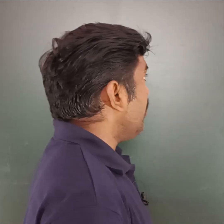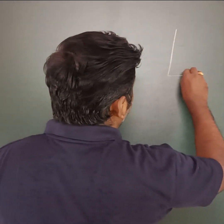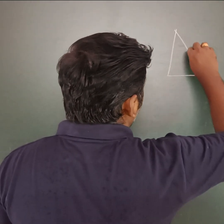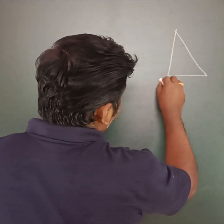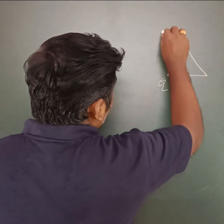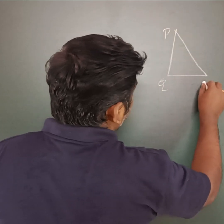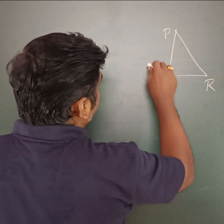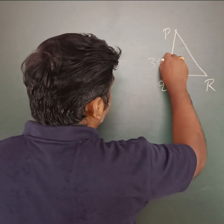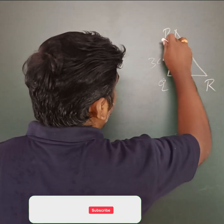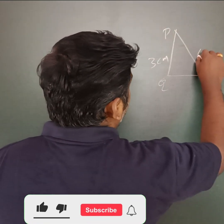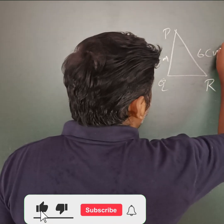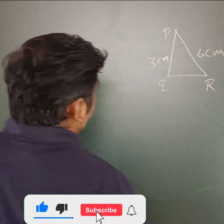So first we have a right angle triangle, right angle at Q. PQ equal to 3cm and PR equal to 6cm.